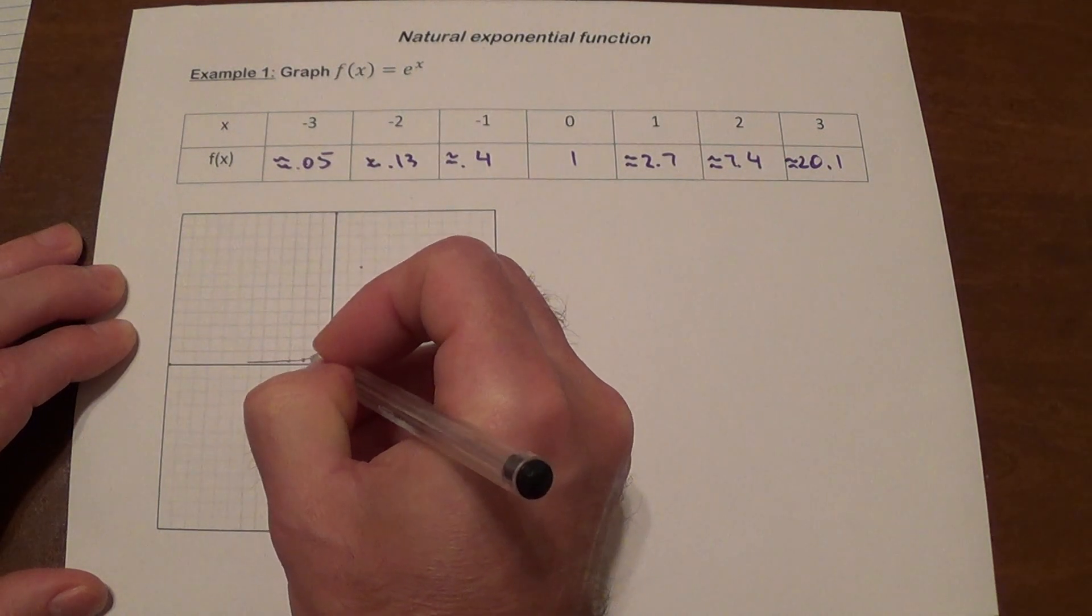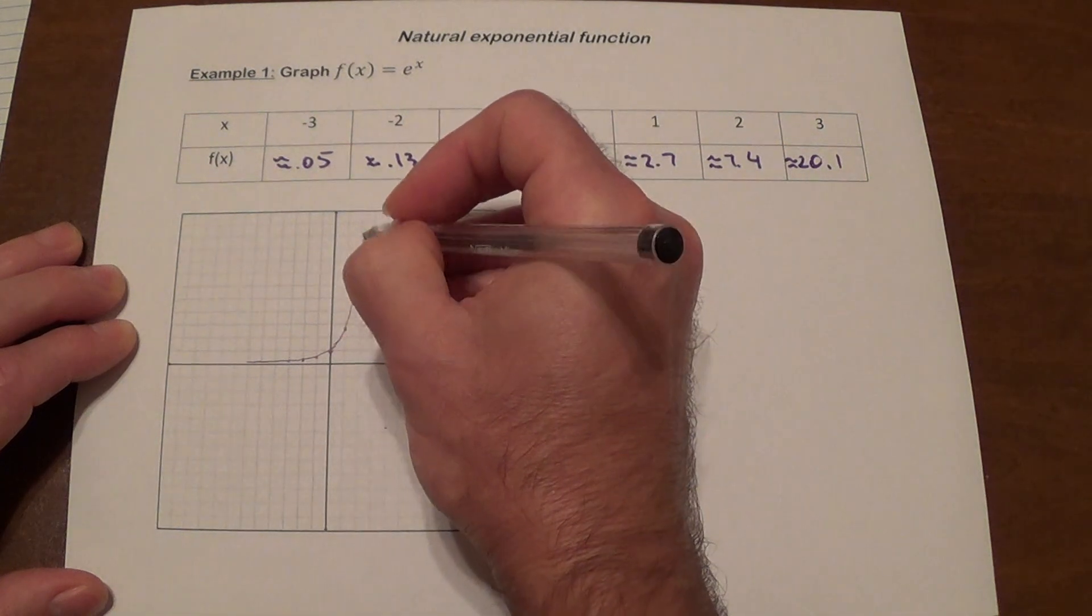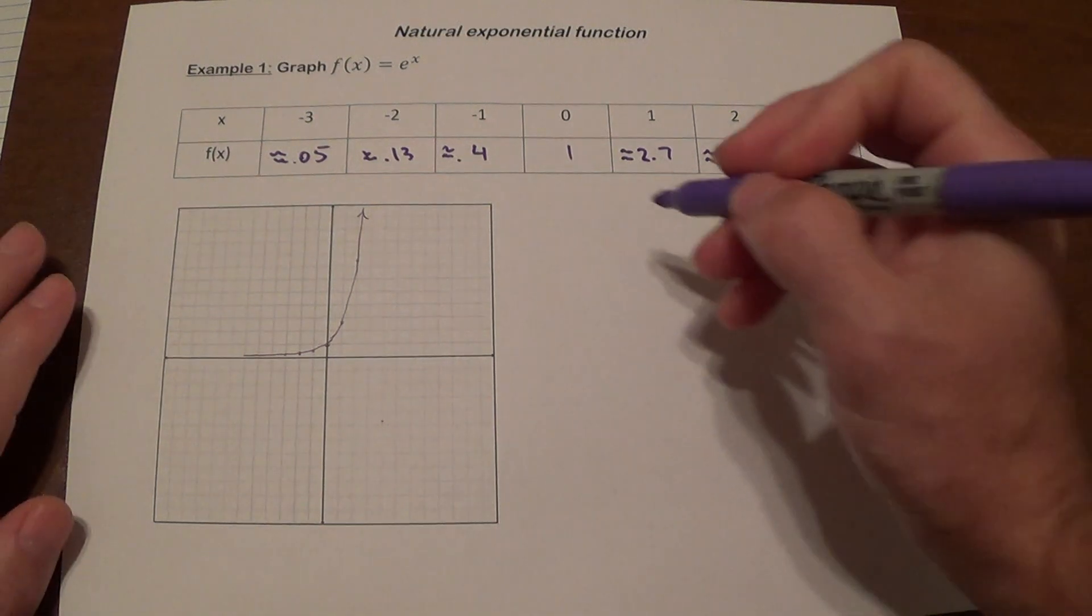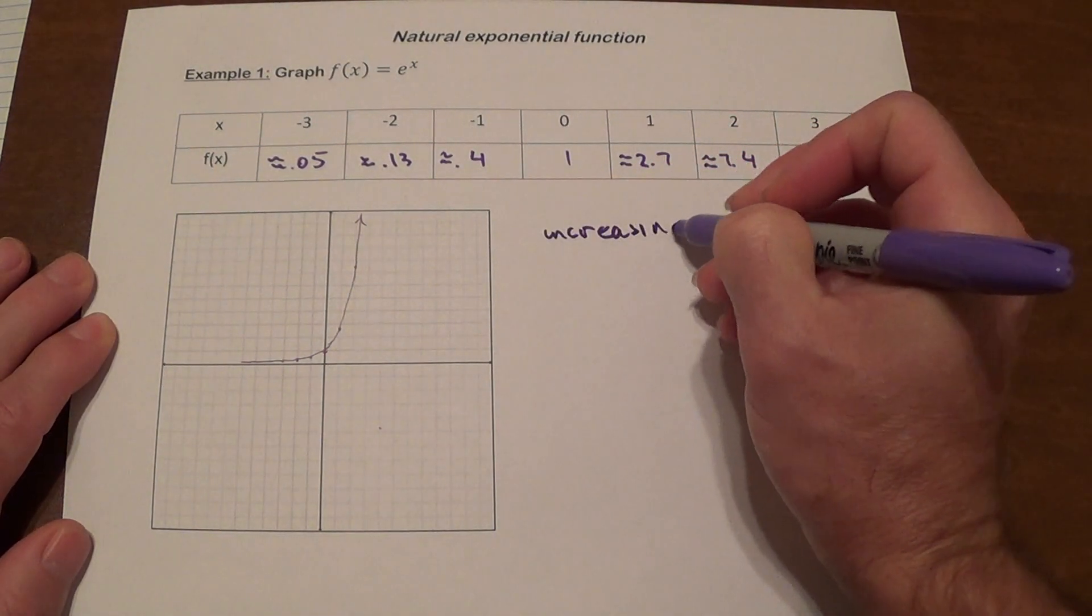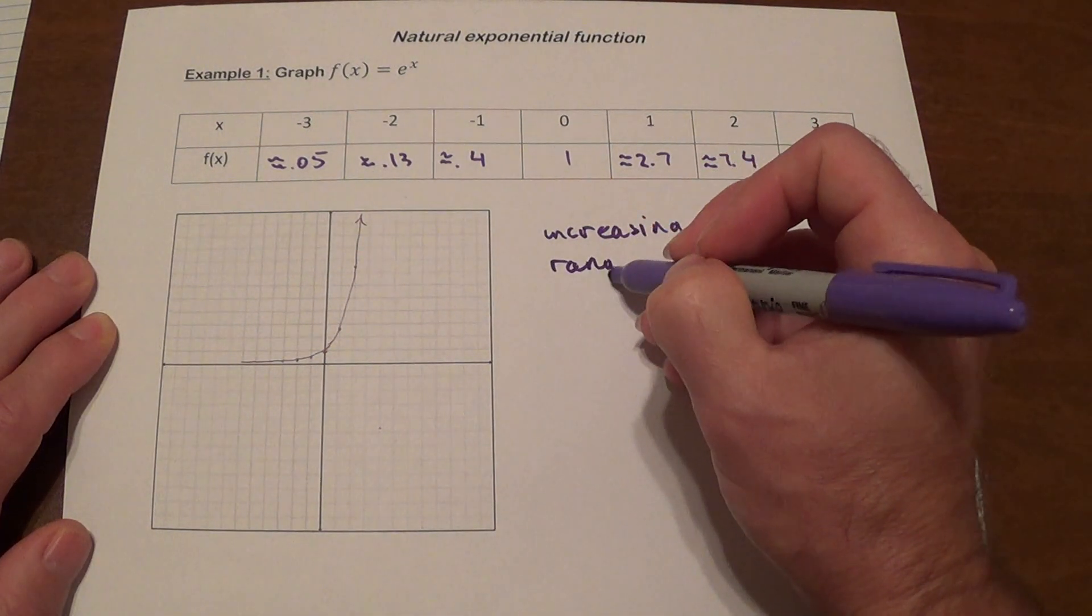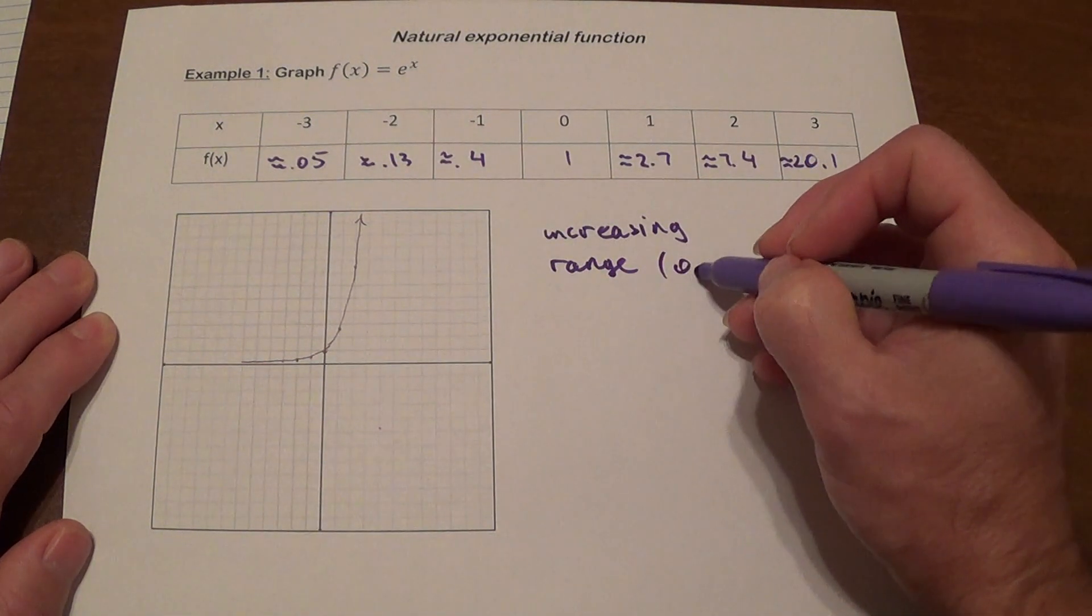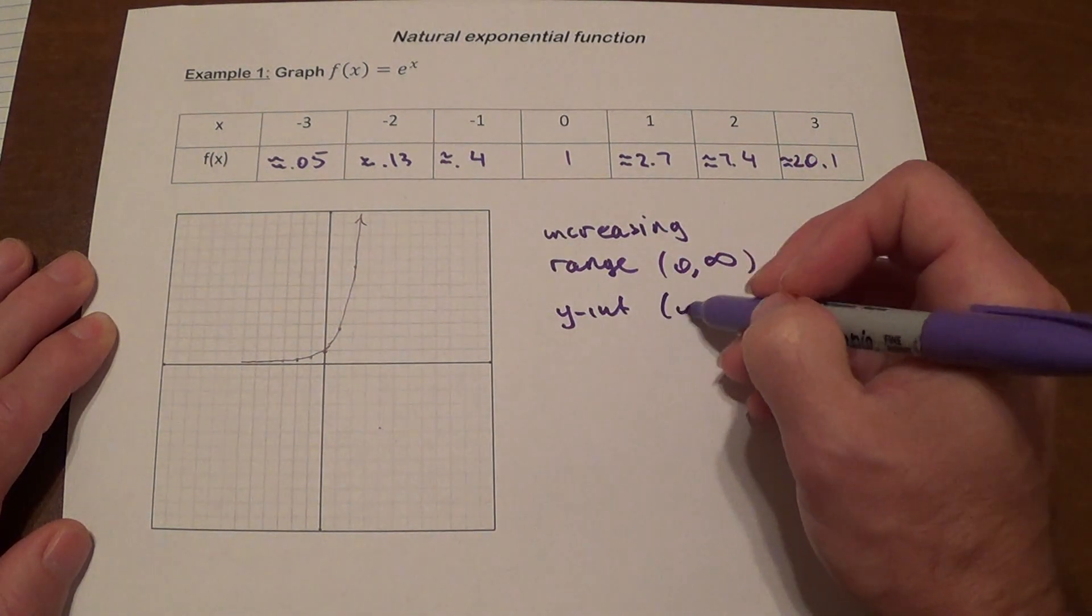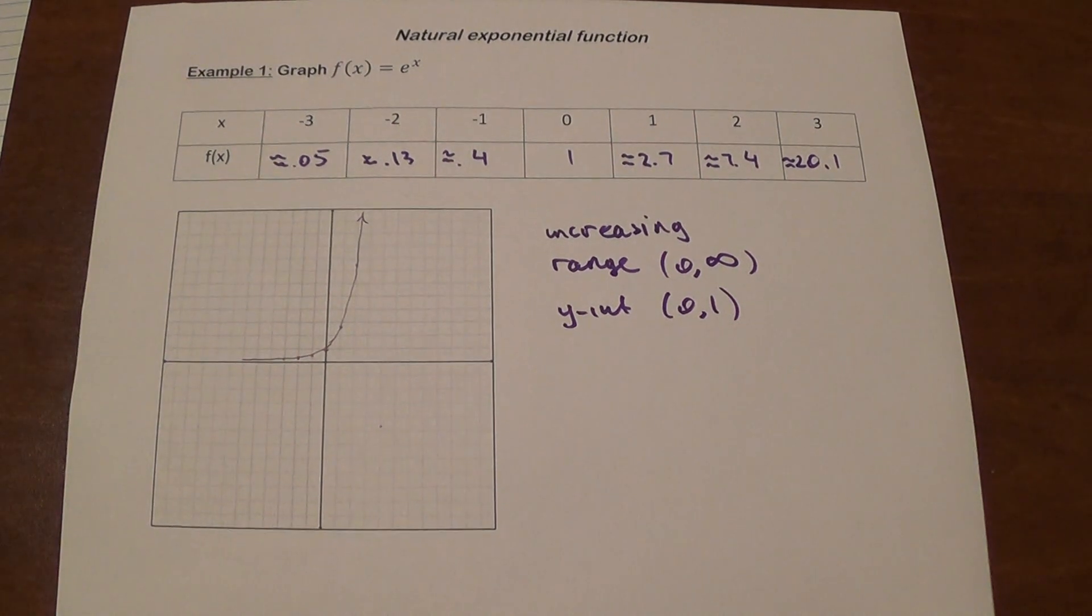And this is what the graph is going to look like. It is an increasing exponential function. So let's write some facts. It's obviously increasing. It is going to have a range, just like other basic exponential functions, from 0 to infinity. It does have a y-intercept at point (0, 1). That's all you need to know about this.